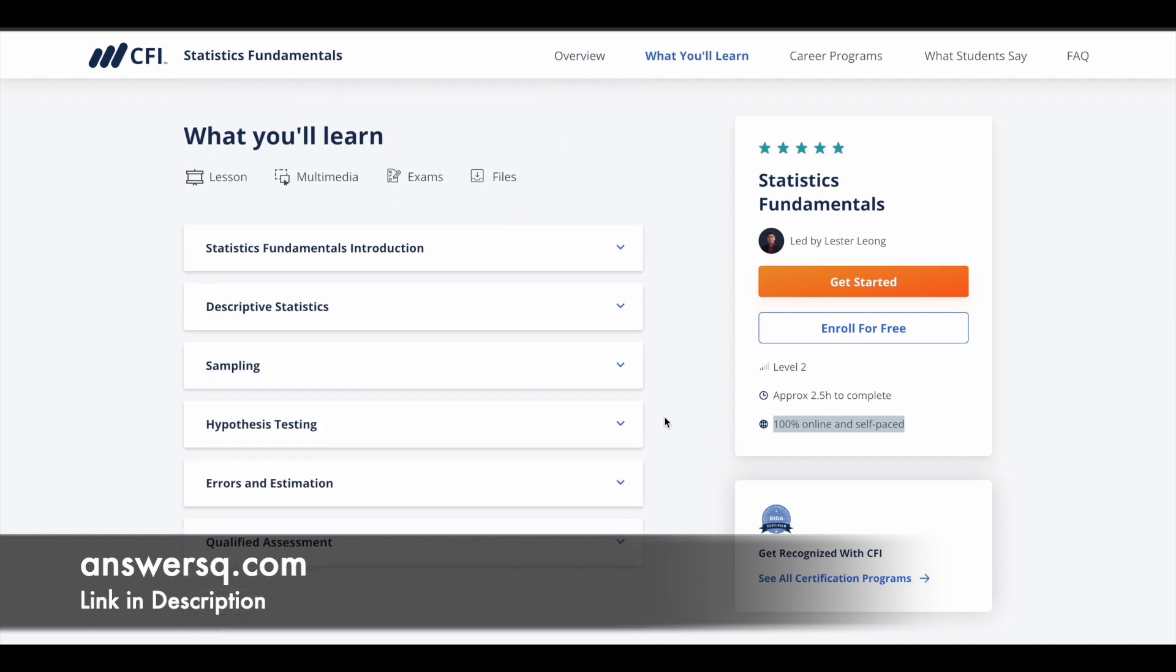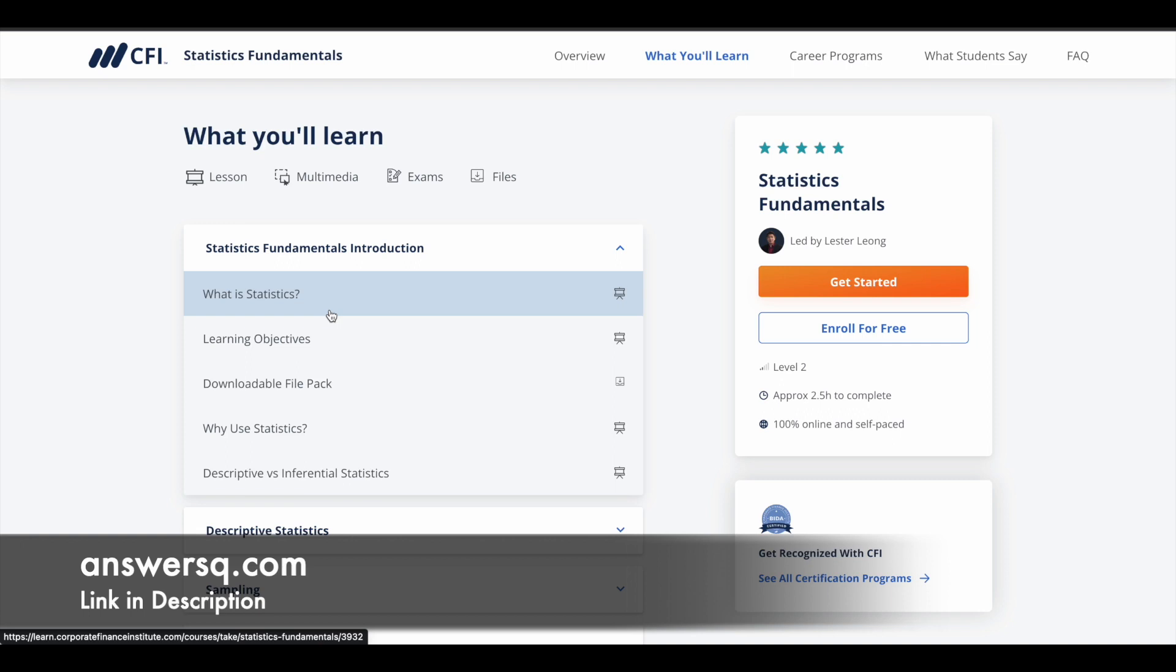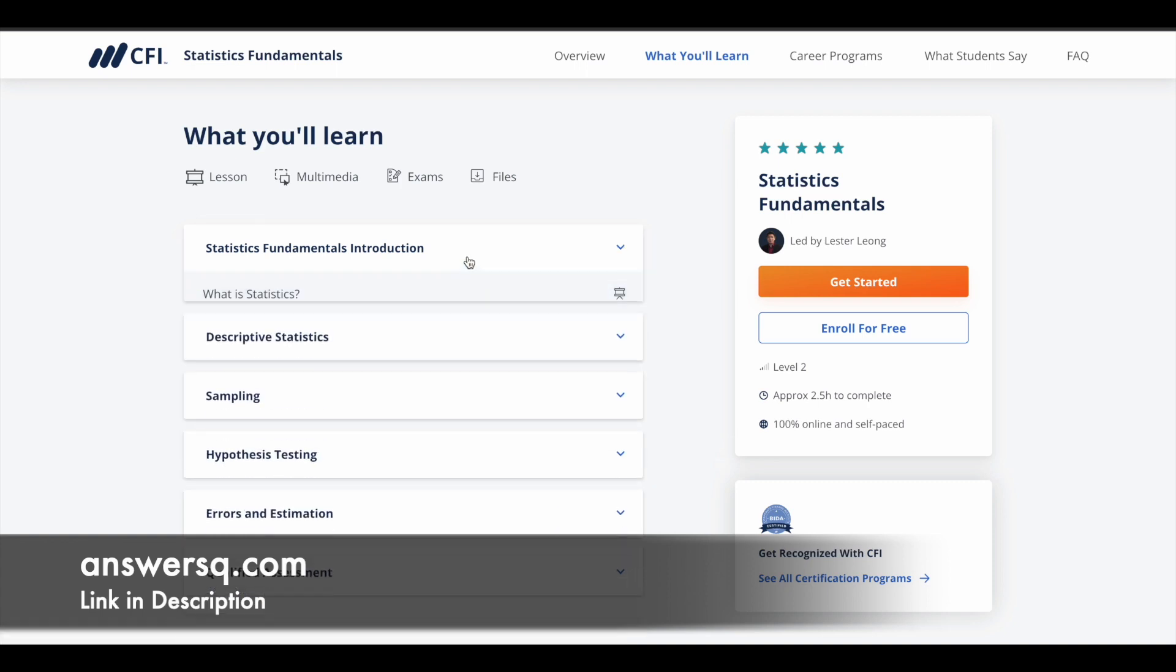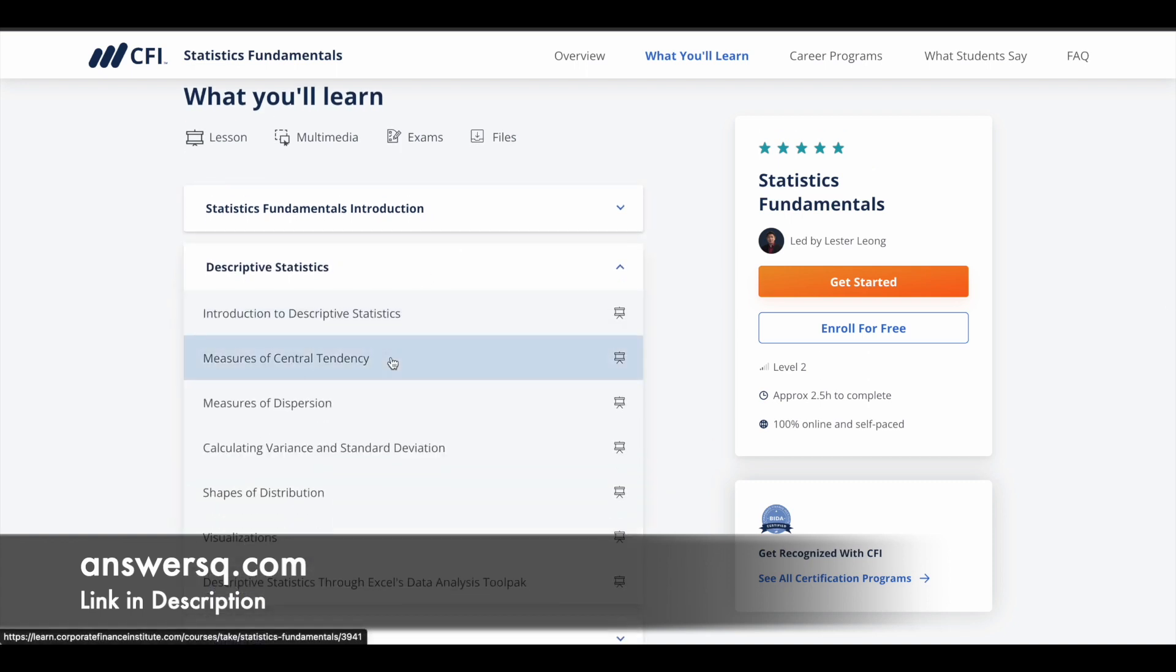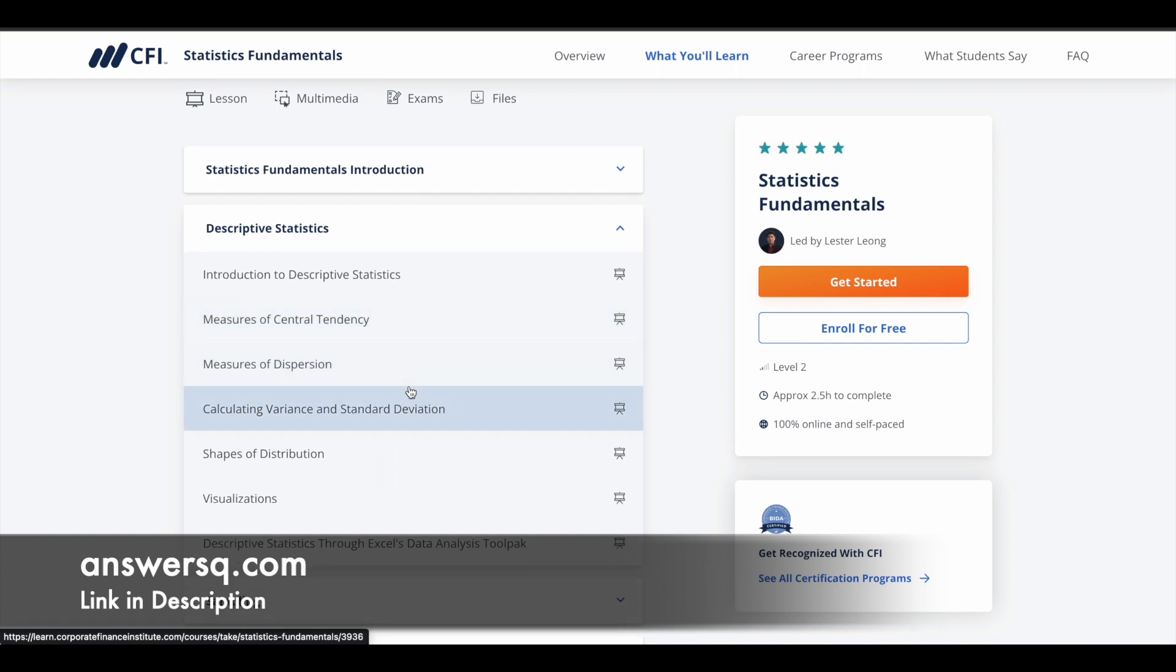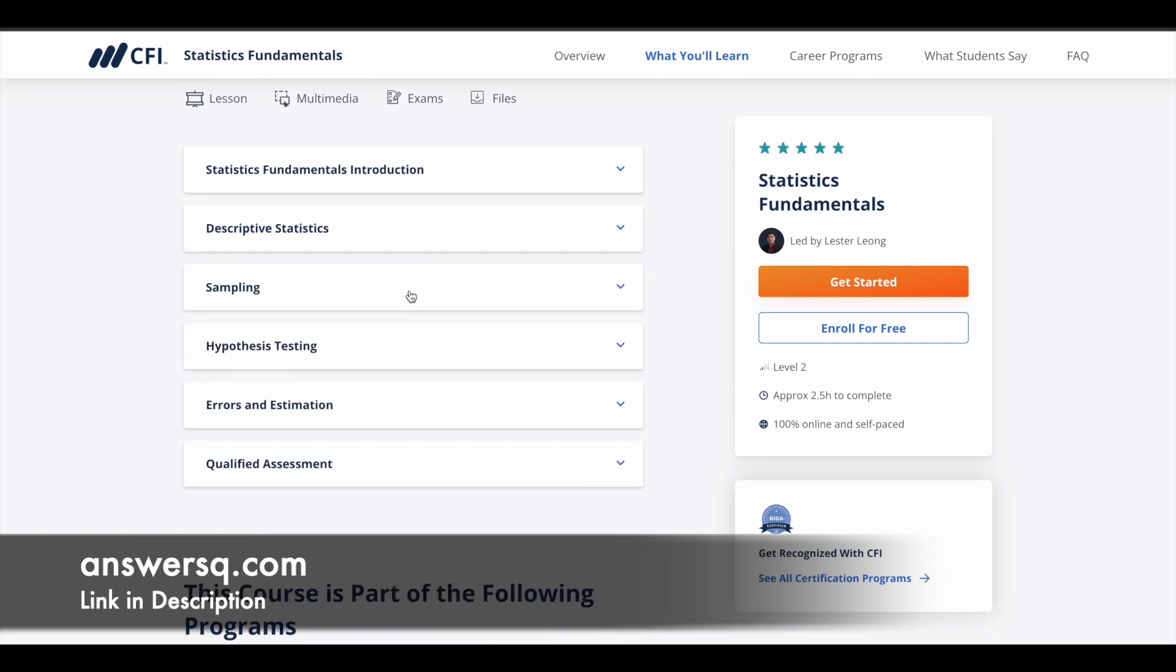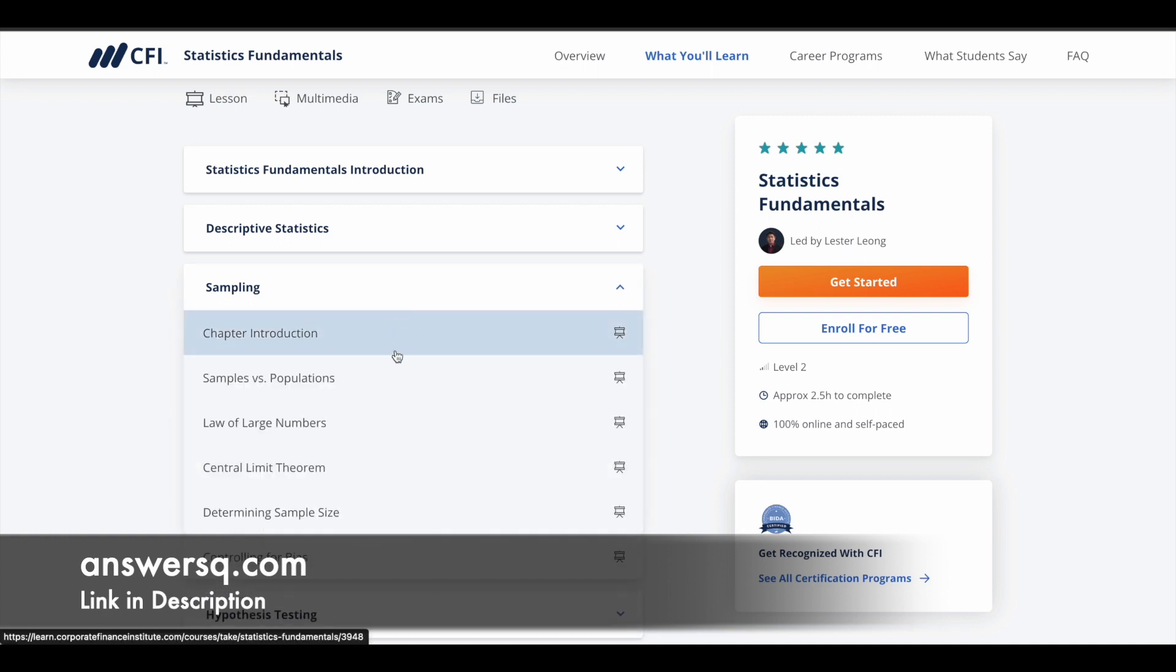Here are the lessons for you. This program contains around five modules starting with the first one, Statistics Fundamentals Introduction. Here you learn what is statistics and why we use statistics, so all those basic concepts will be covered in this introduction section. Then you learn about descriptive statistics like central tendency, dispersion. All those things will be covered in the descriptive statistics module. Then the third one is sampling.